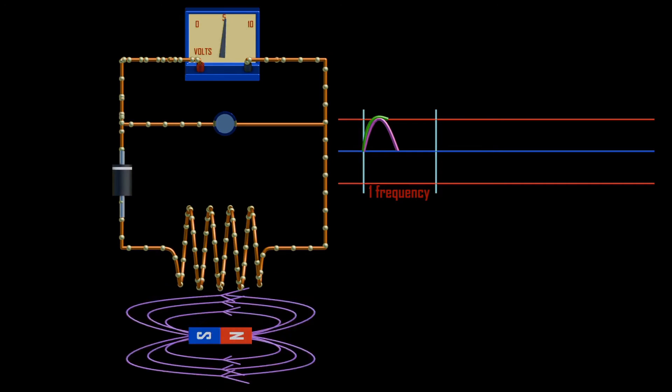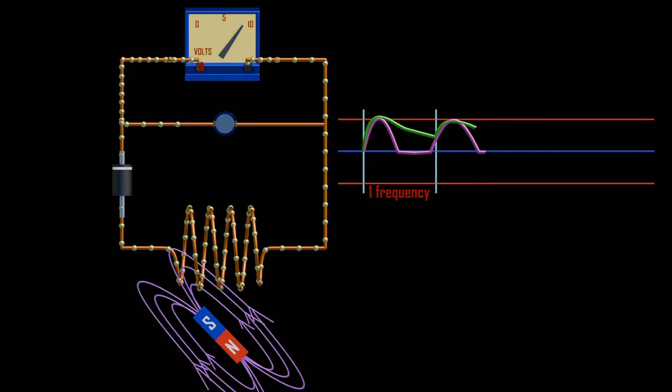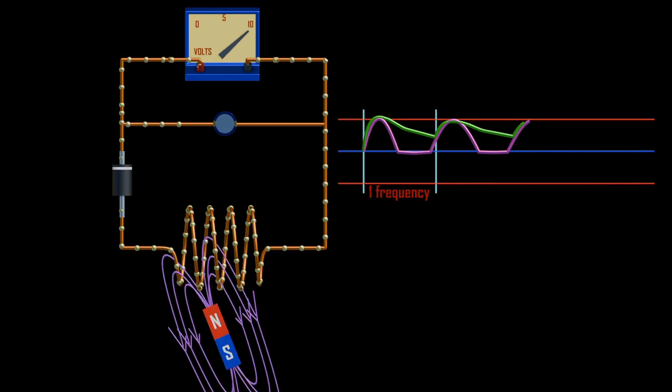In half-wave rectifier, we noted that we can use one diode. It conducts with forward current and blocks when the reverse current flows.